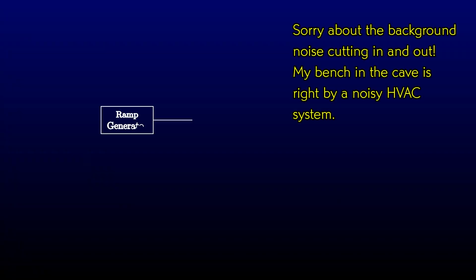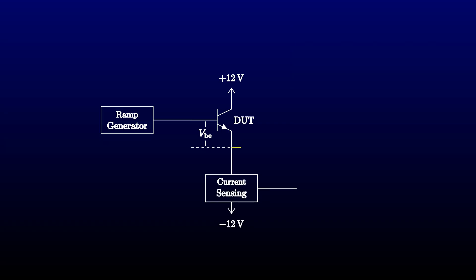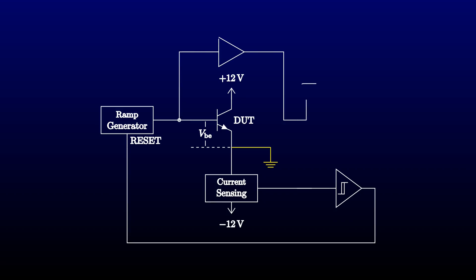What we're trying to do is generate a voltage ramp and apply it to a device under test. We designed an op-amp circuit that will sense the current while holding the other end of the device at a virtual ground. We have a Schmidt trigger circuit looking at the current that resets the ramp generator when the current rises to a predetermined setpoint. And we buffer both the voltage and the sensed current and send them to an oscilloscope for analysis.